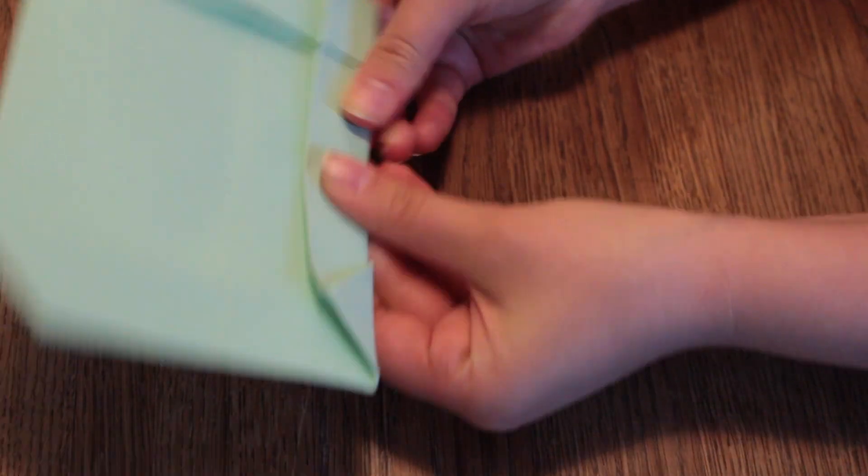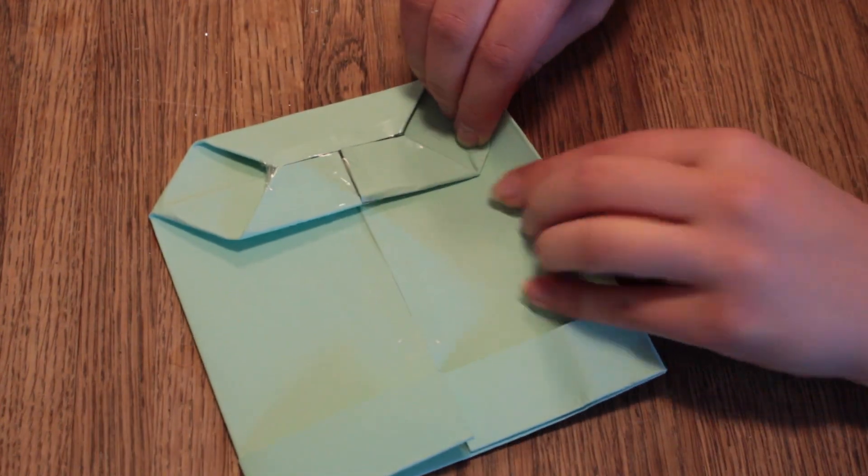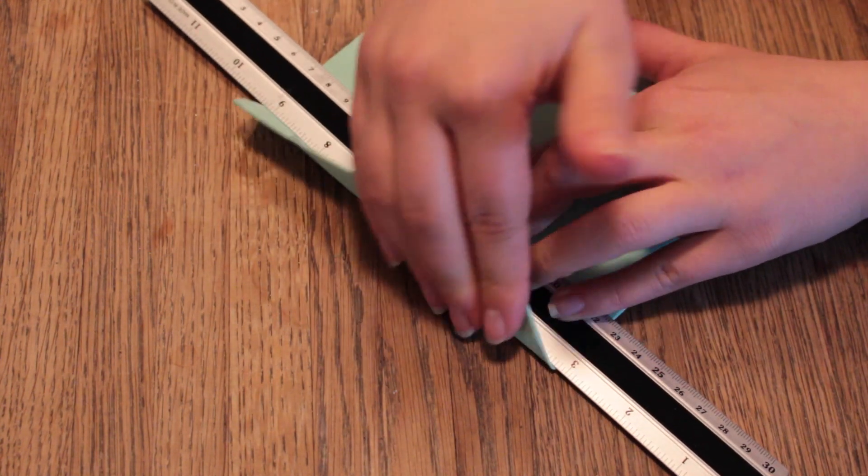Then press down firmly on this score and then turn it over and then refold it and press down once again. And don't forget the other edge as well.